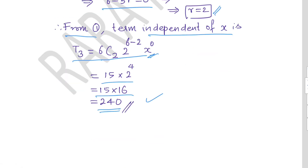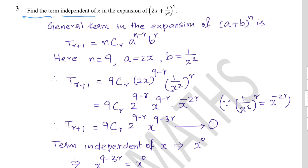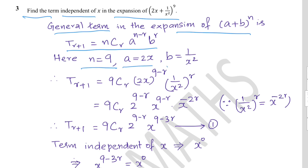Example 3: Find the term independent of x in the expansion of (2x + 1/x²)^9. Here n = 9, a = 2x, b = 1/x². Substituting: T(r+1) = 9Cr · (2x)^(9−r) · (1/x²)^r. Collecting constants: 9Cr · 2^(9−r). The x terms: x^(9−r) · x^(−2r) = x^(9−3r).